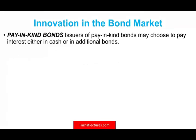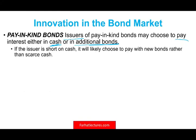There are also pay-in-kind bonds, where the issuer may pay interest either in cash or in additional bonds. Why would they do that? If the issuer is short on cash, it will choose to pay with new bonds rather than cash. Essentially they are adding to their liability — increasing the bond amount — instead of making a cash payment.